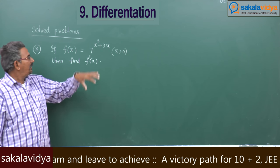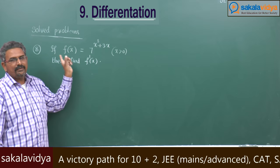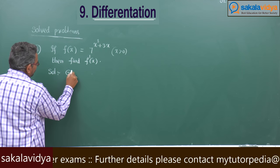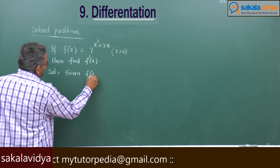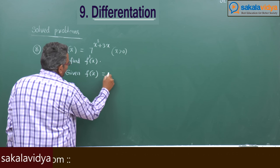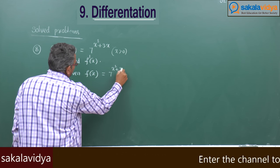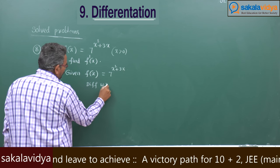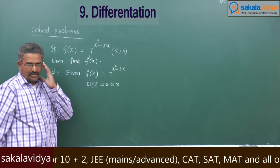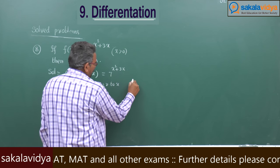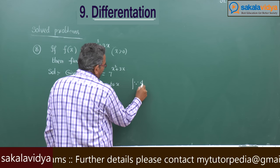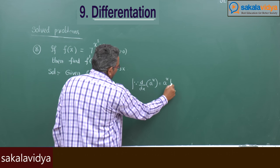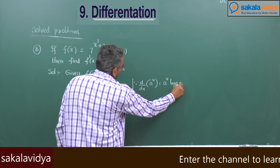Let us form the differentiation of the given function. Given f of x equals 7 to the power of x squared plus 3x, differentiate with respect to x. Using d by dx of a to the power of u equals a to the power of u times log a times du by dx.